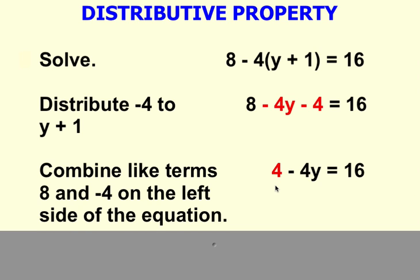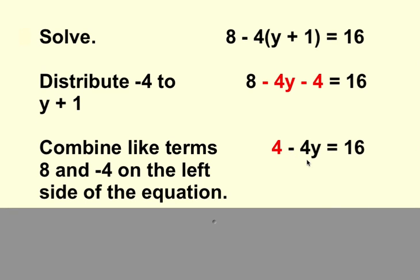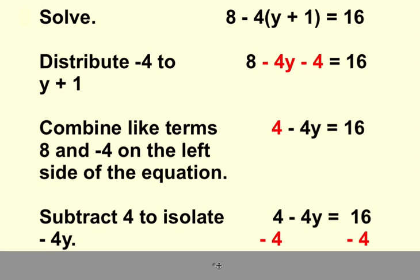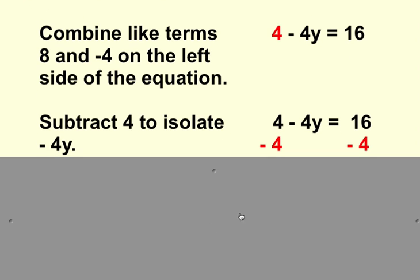Your equation now says 4 minus 4y equals 16. To isolate the variable term negative 4y, we must get rid of positive 4. So we will subtract 4 from both sides.